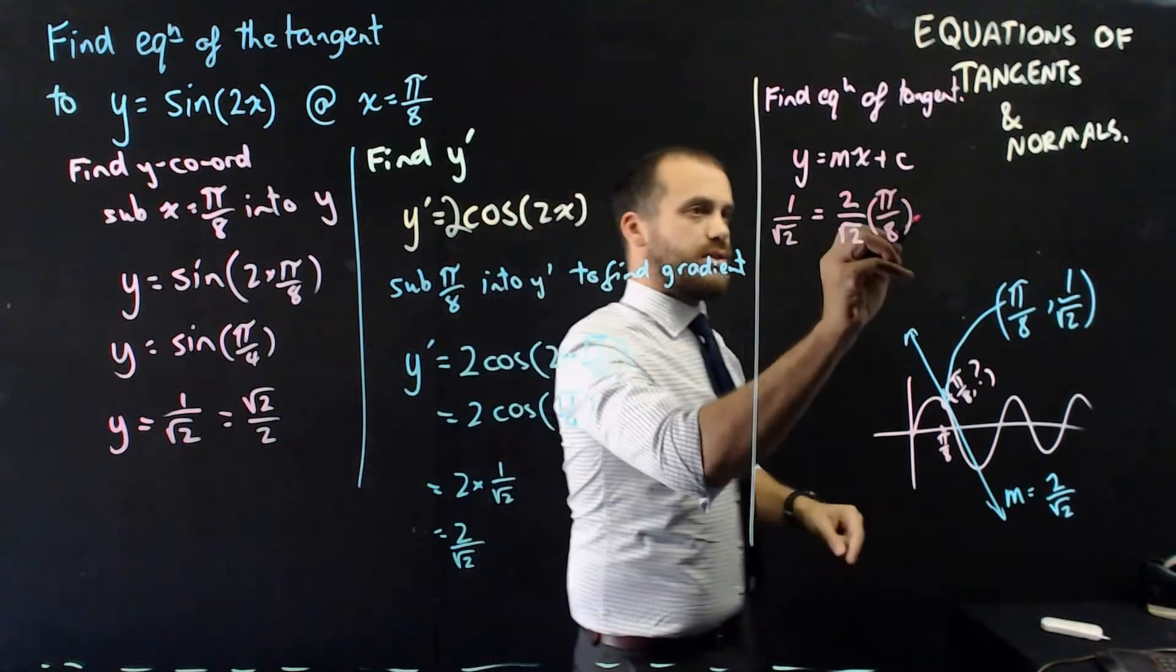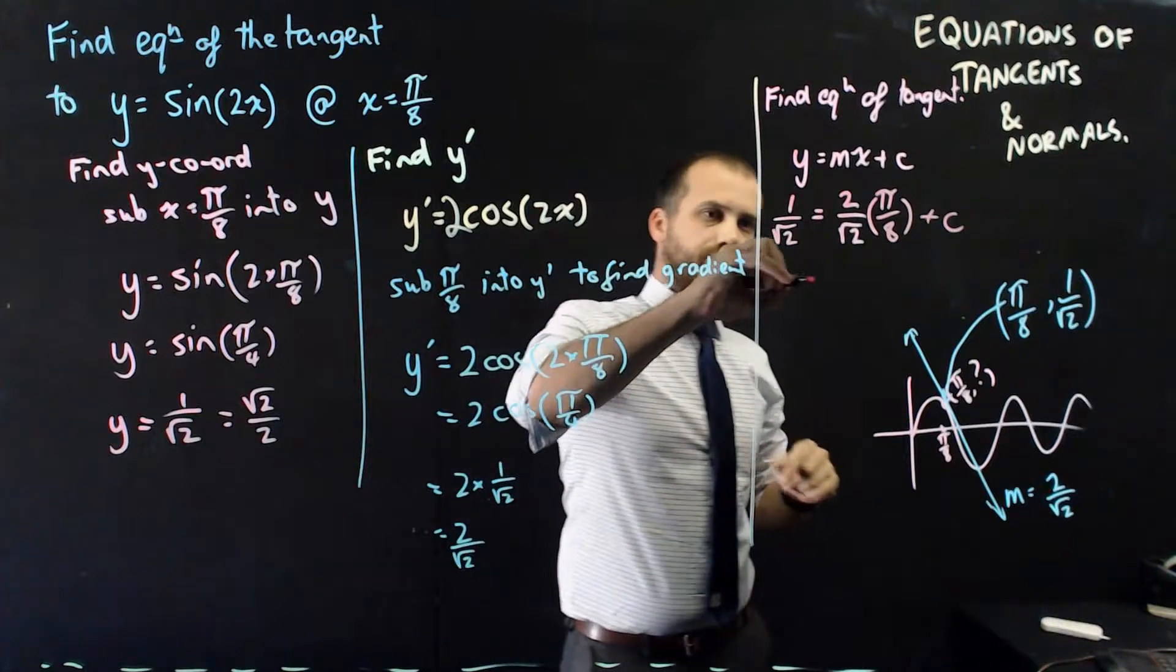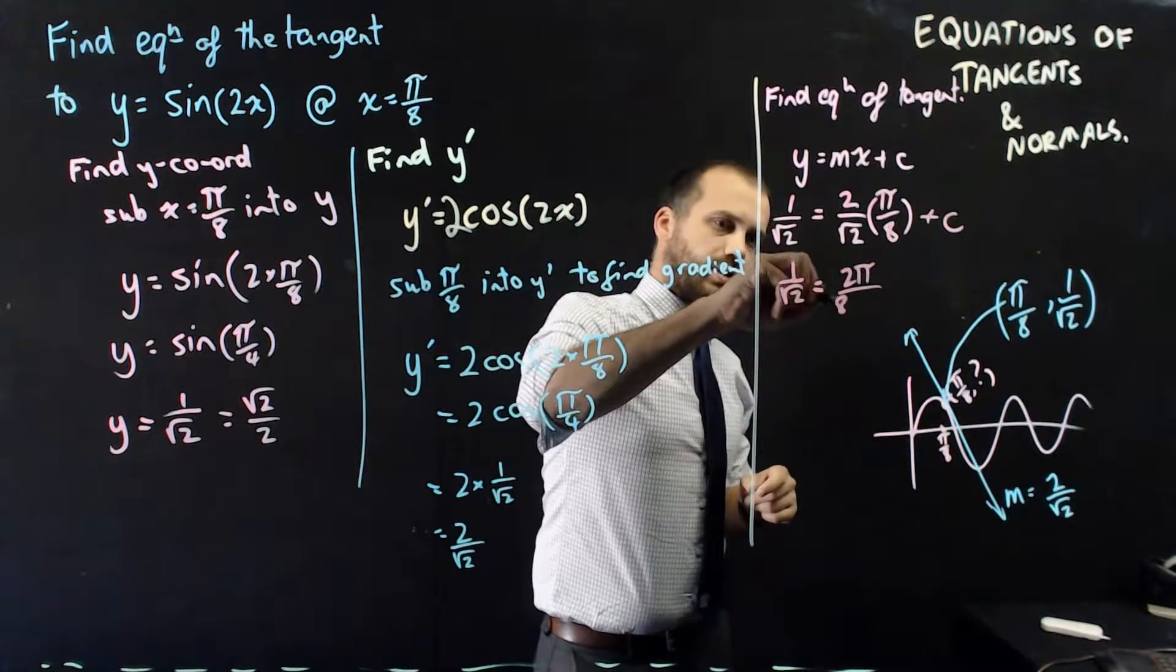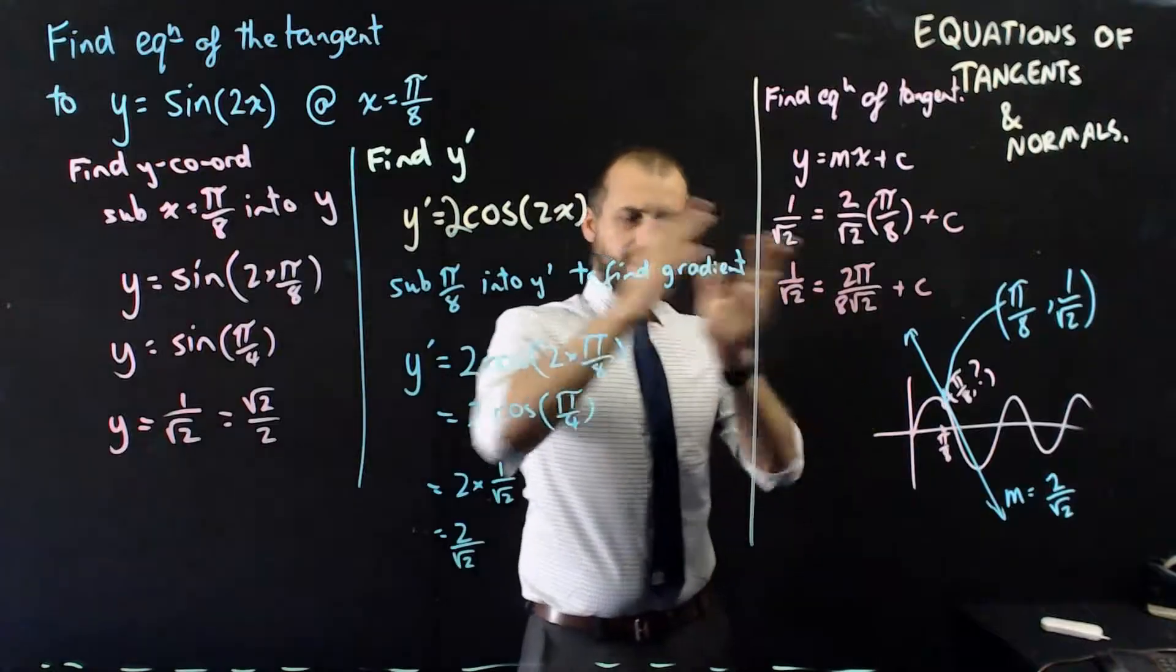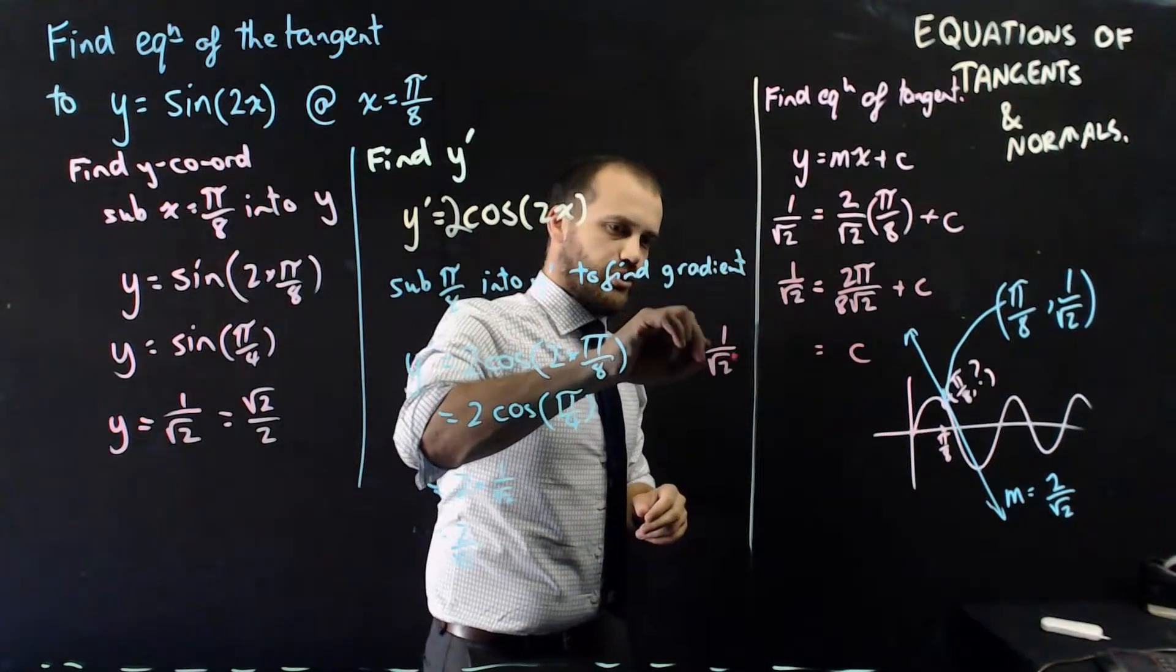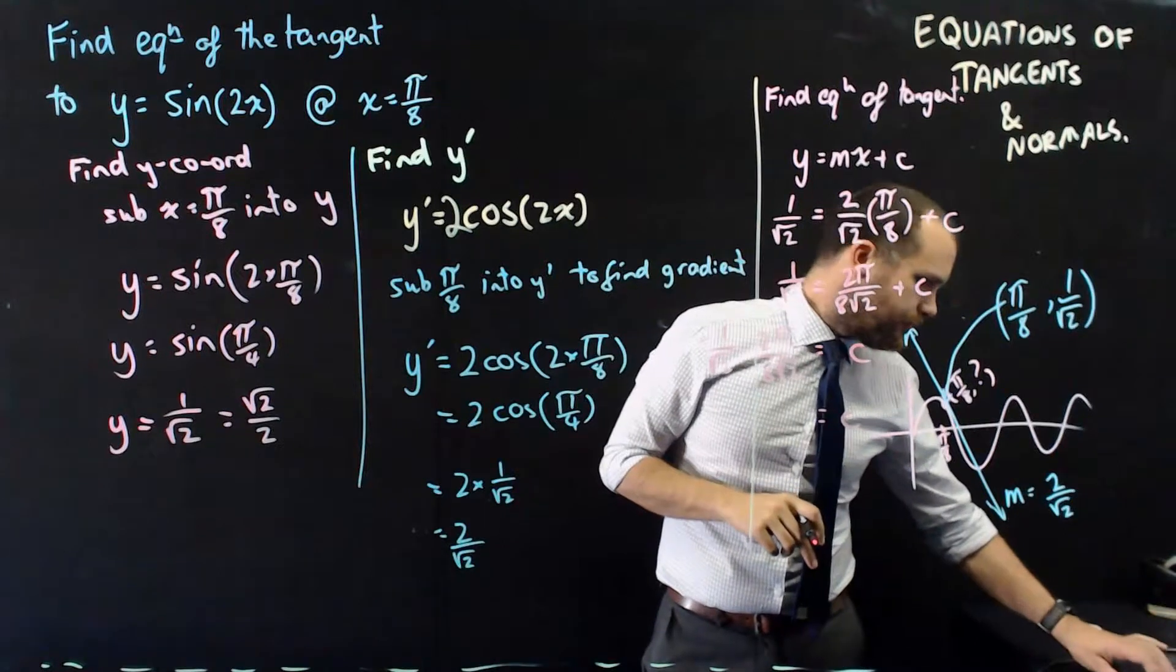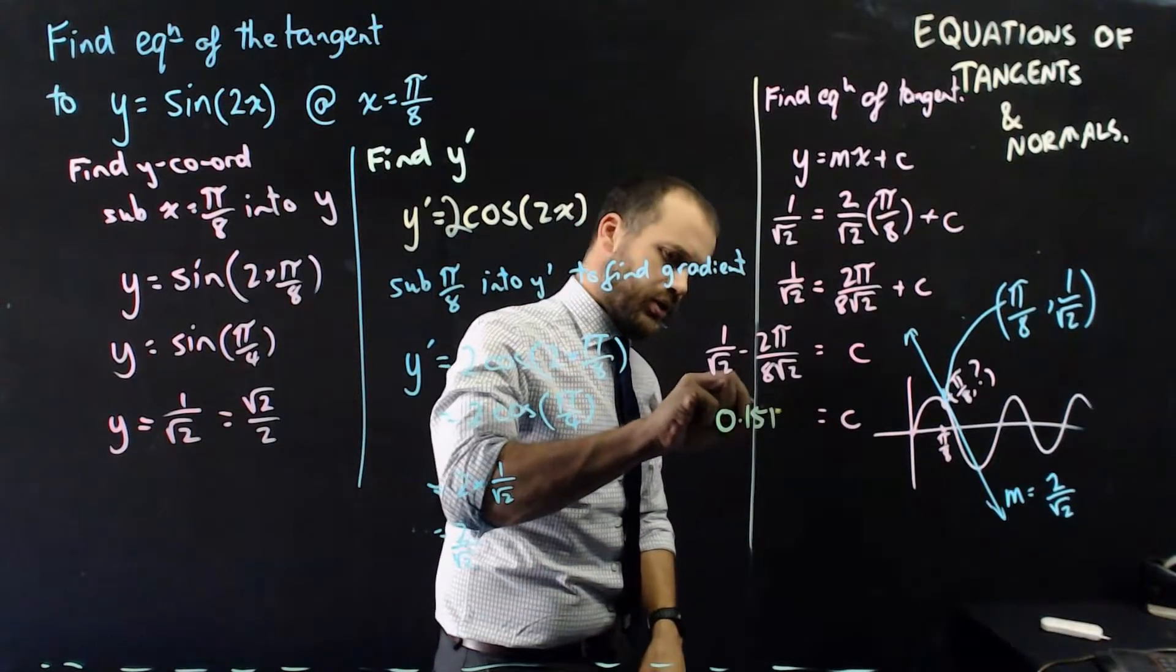And now I just need to find out what the c value is. If I know what the c value is, I can finish this whole thing. So what do I have? I have 1 on root 2 equals 2π on 8 root 2 plus c. And then I can subtract one from the other. 1 on root 2 minus 2π on 8 root 2. And I'll get a c value there. So I'm getting a c value of 0.1517.